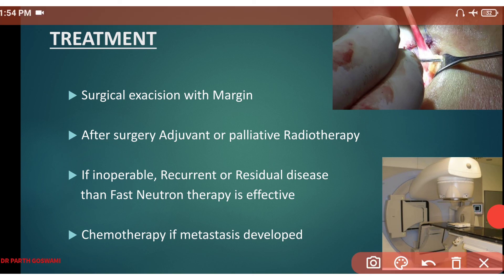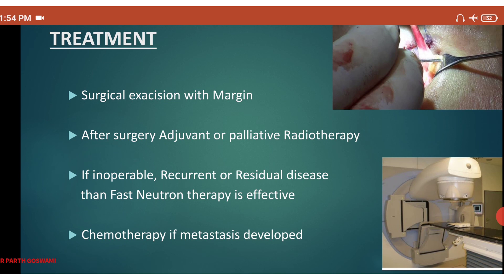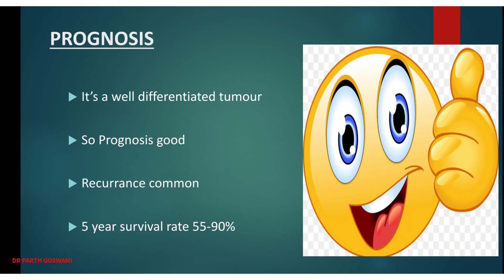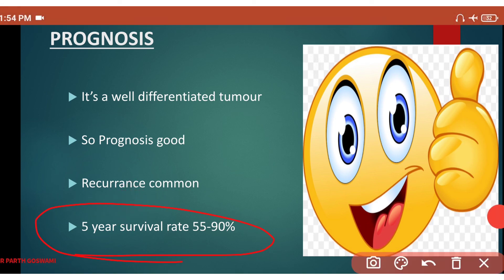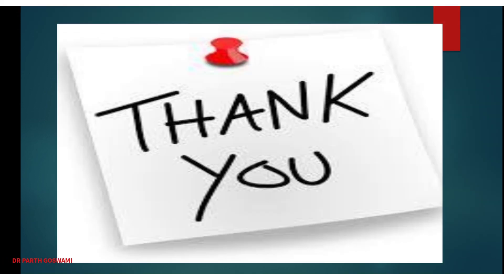Prognosis is generally good because it is a well-differentiated tumor; most patients have grade 1 or grade 2 disease. However, recurrence is common. The five-year survival rate is 55 to 90 percent, making it an overall good prognostic tumor. Thank you — this is all about adenoid cystic carcinoma.